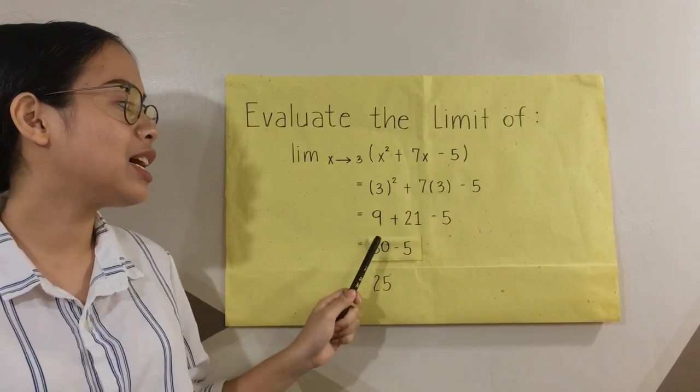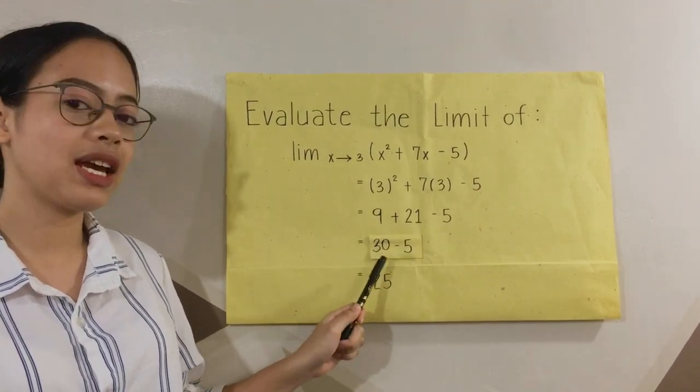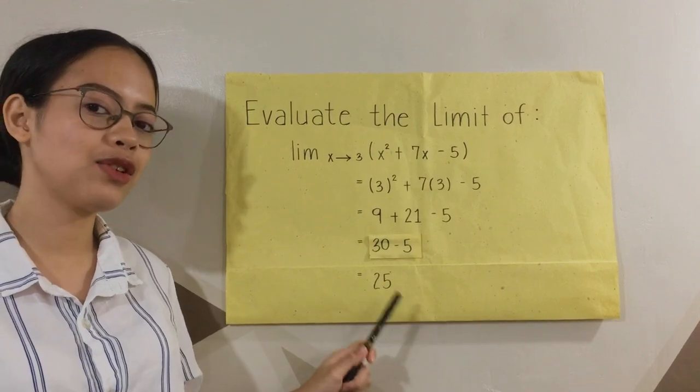As a result, 9 plus 21 is 30 minus 5, and 30 minus 5 equals 25.